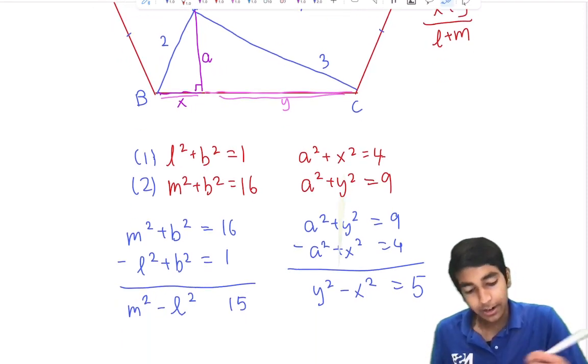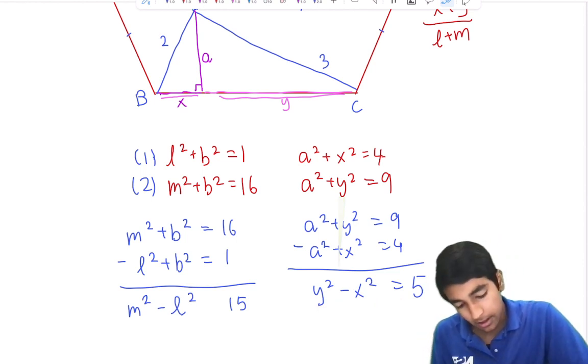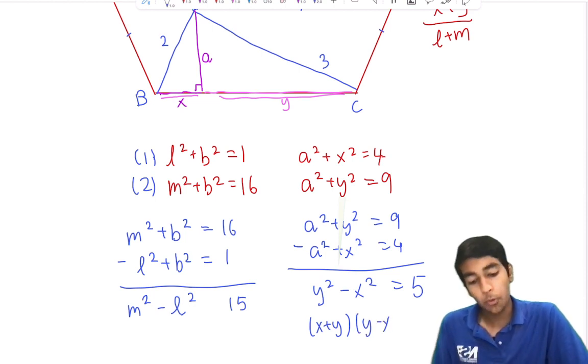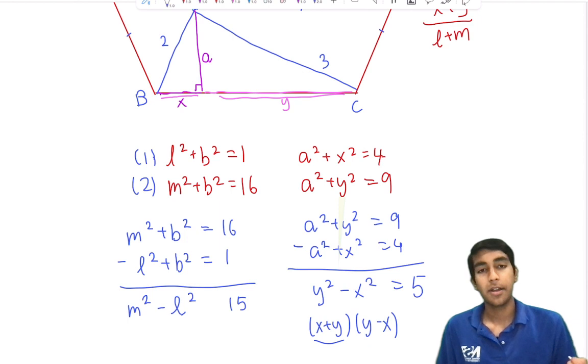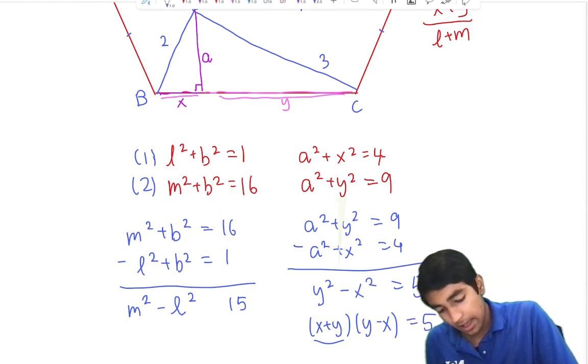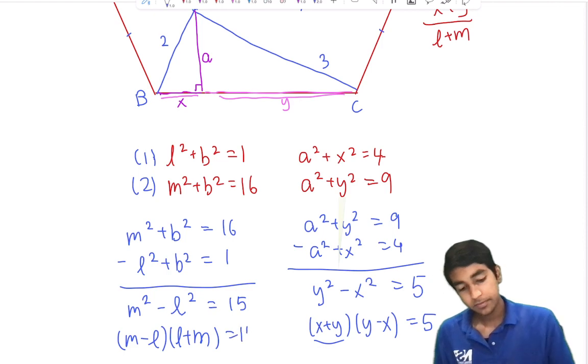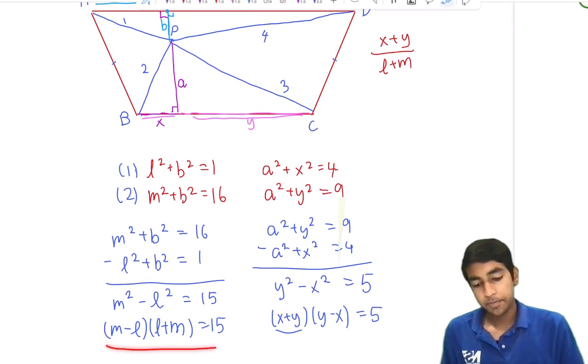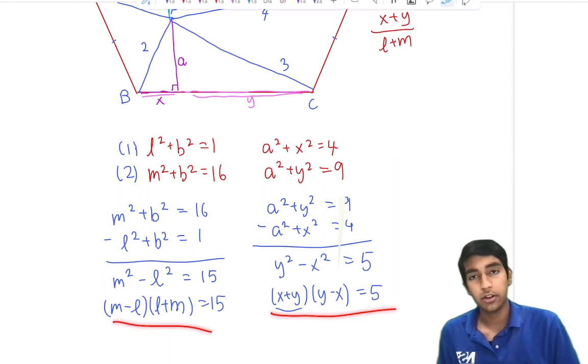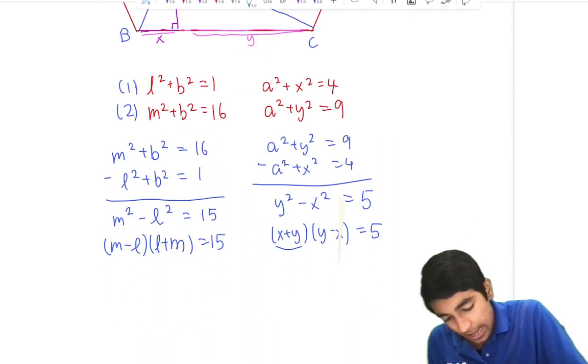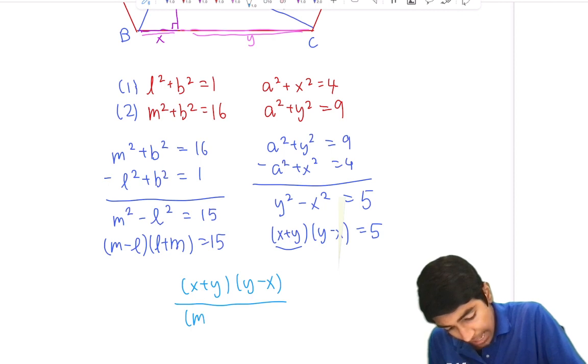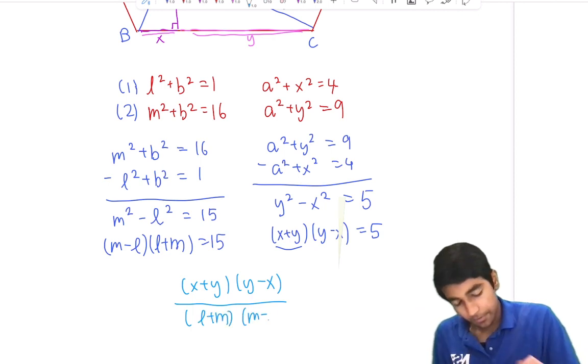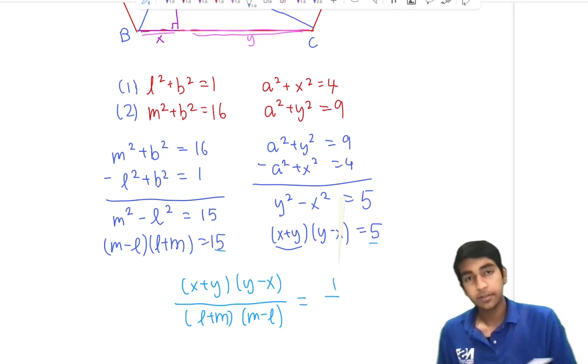Difference of squares. Y squared minus X squared is X plus Y times Y minus X, or Y plus X times Y minus X. It's 5. And similarly, we have M minus L times M plus L, or L plus M, equals 15. So we're looking for X plus Y divided by L plus M, right? So what happens if we just divide this equation by this equation? We would get X plus Y times Y minus X over L plus M times M minus L. And this is 5 over 15, a third.